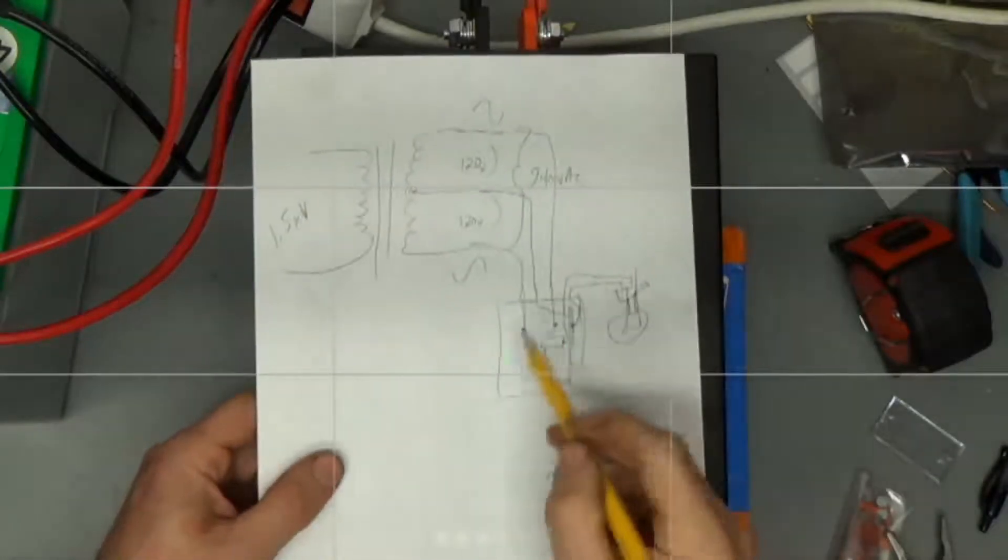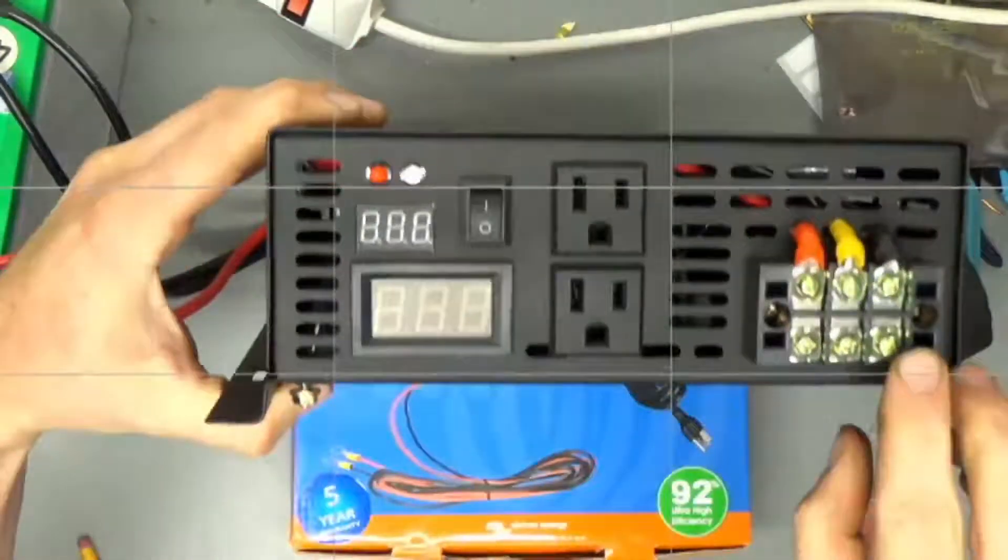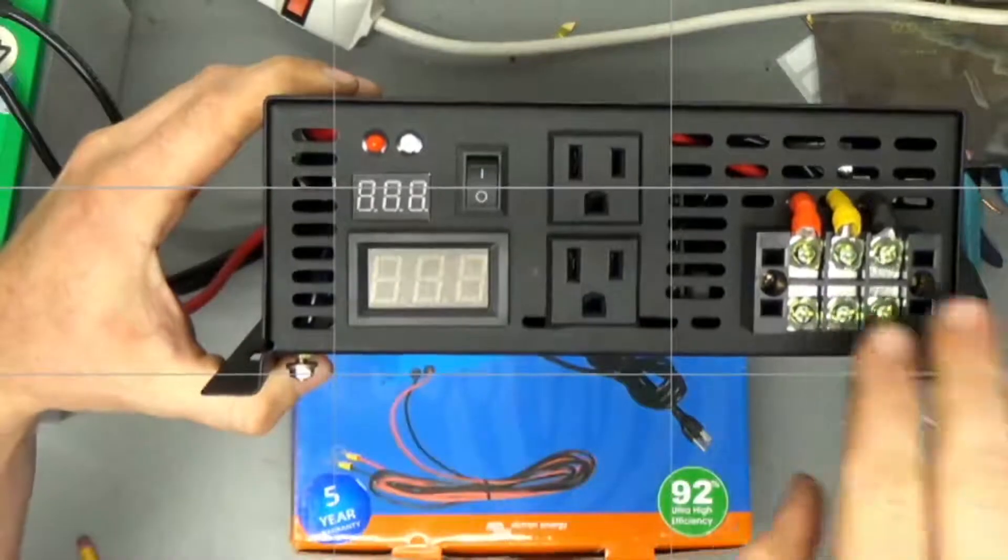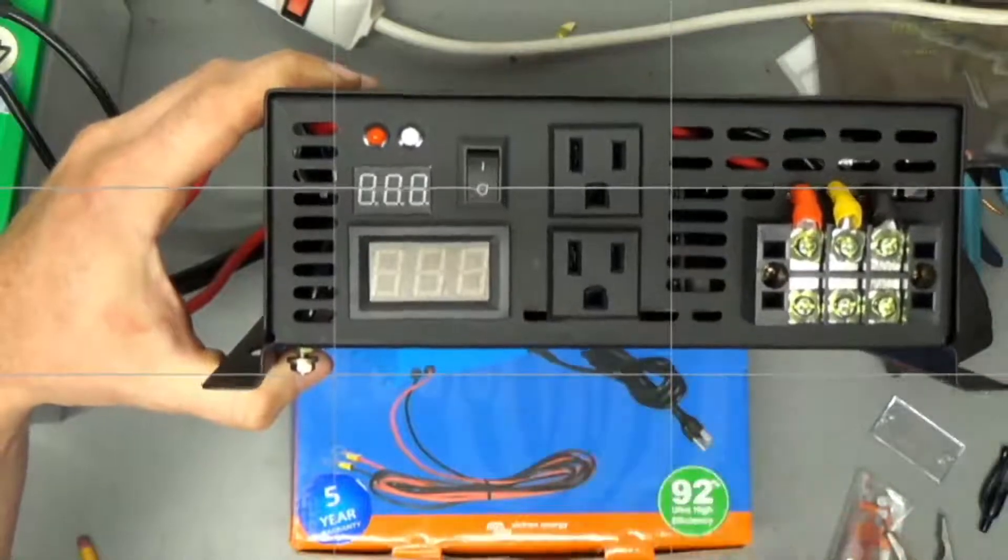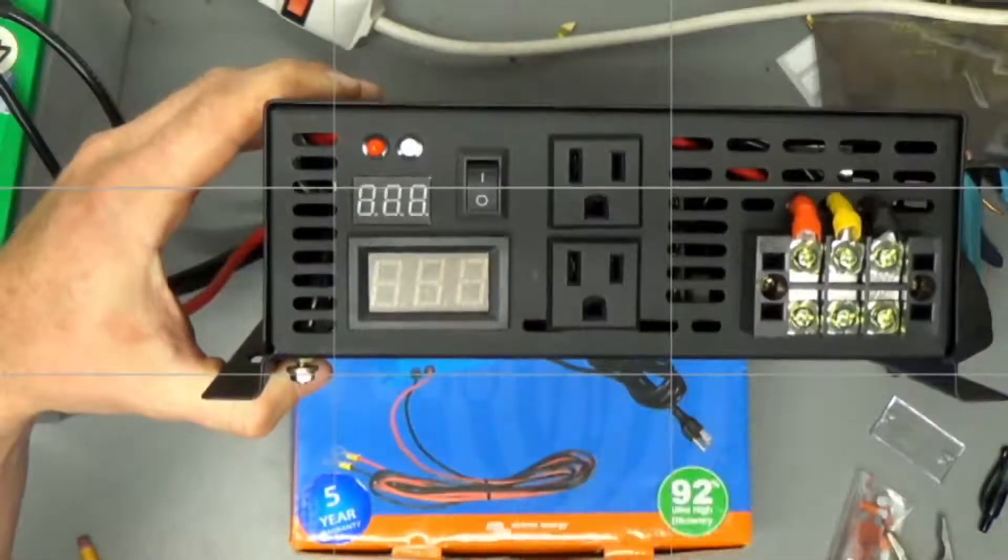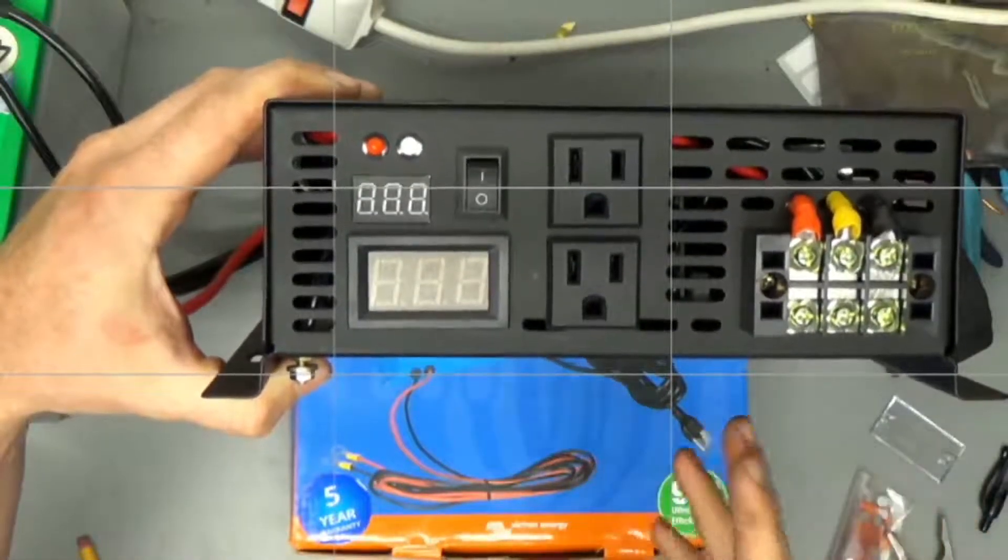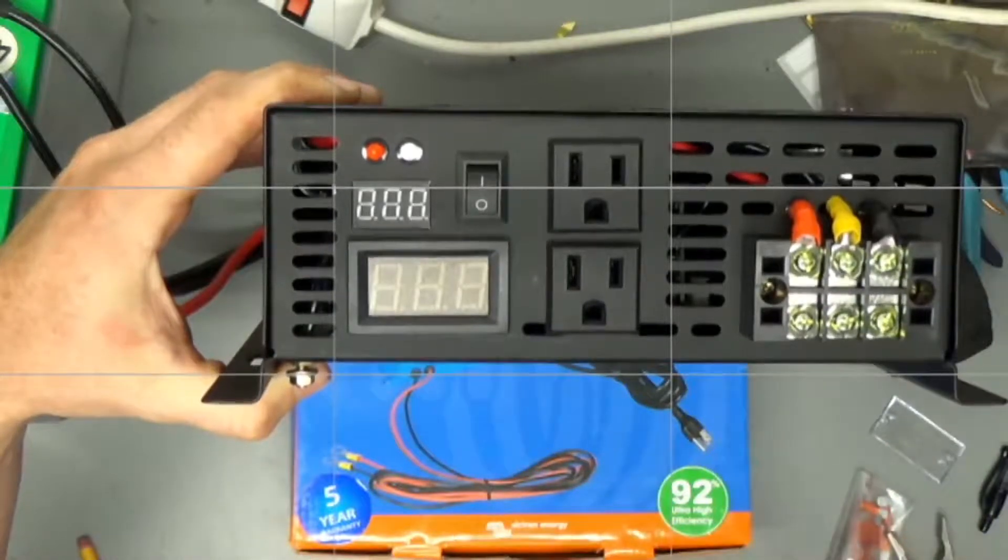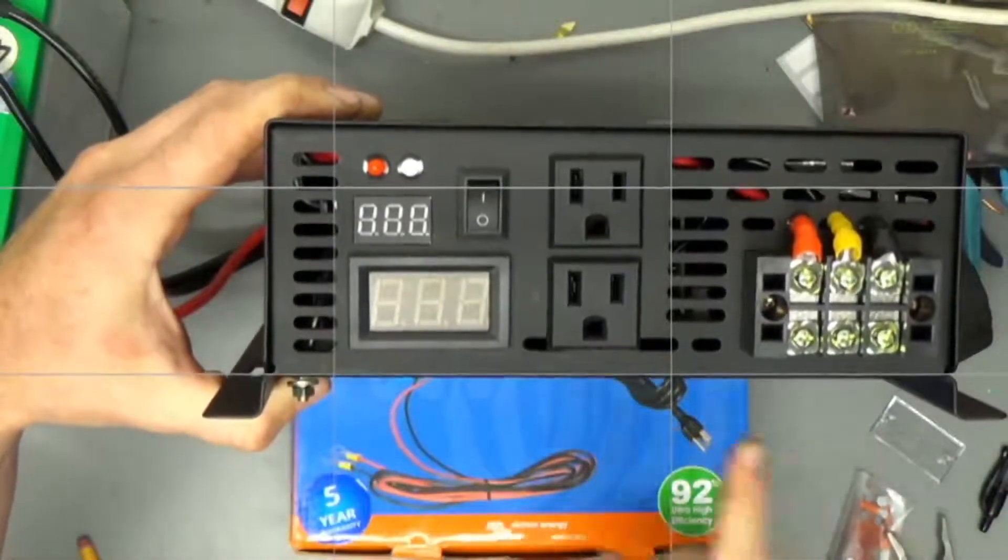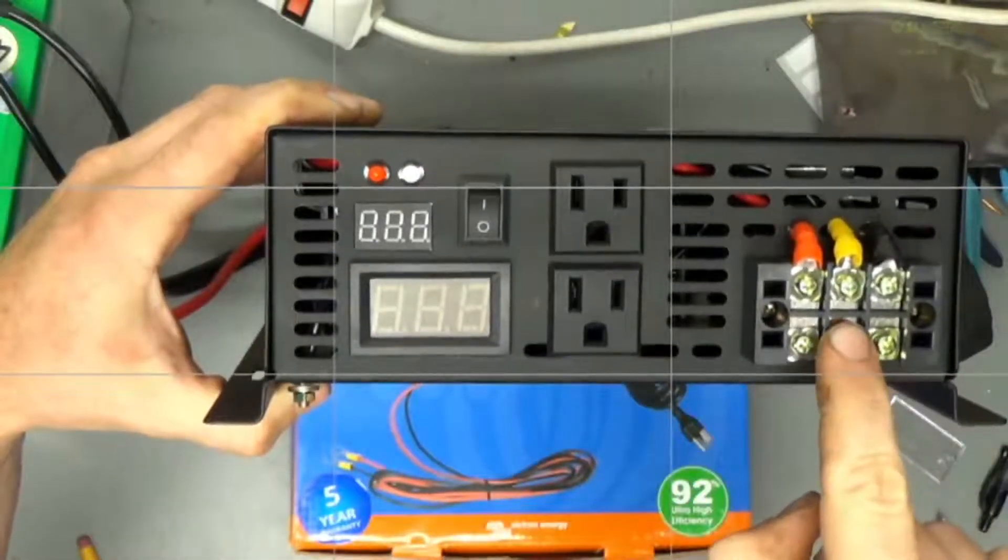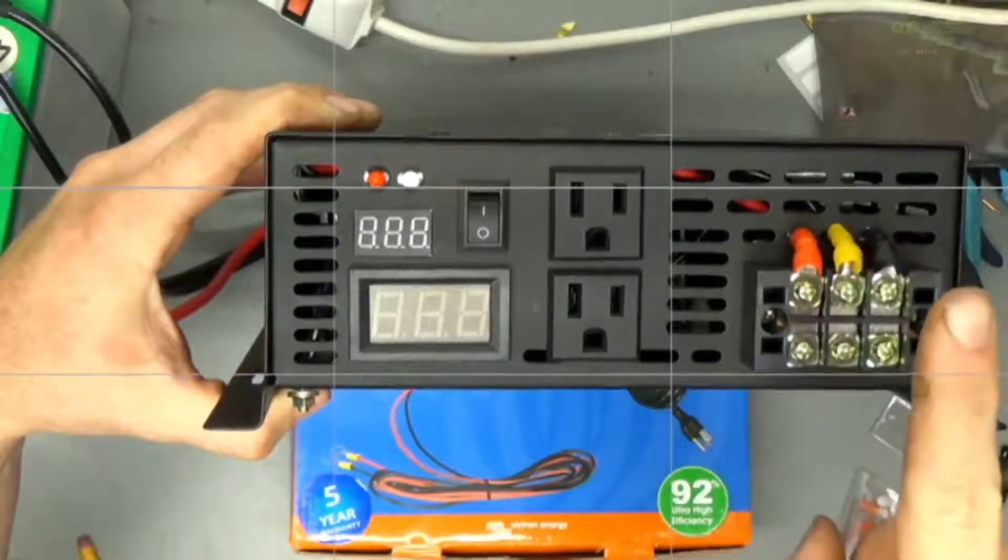So when you hook this inverter up to your panel box like this, you're essentially shorting one side to the ground through the panel box in your house and that blows up one side of the inverter. And that's why people are blowing these things up when they try to hook them to their houses. Now, I think that this was kind of a shitty way to design this to begin with, but I guess it works okay for like RVs and shit like that because it's isolated from the ground anyway.